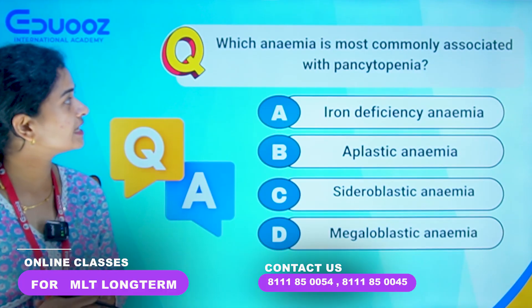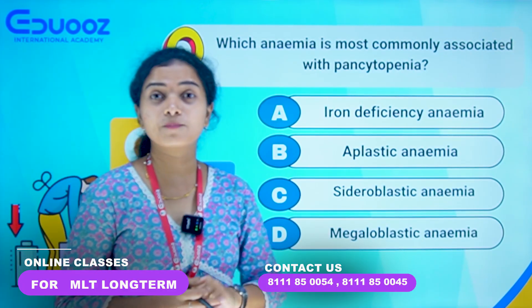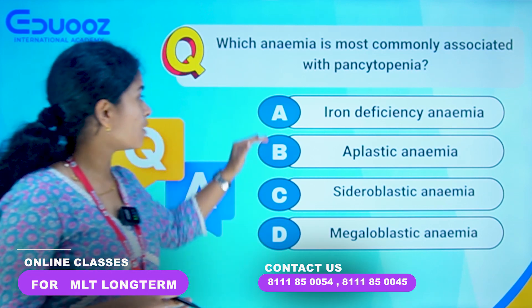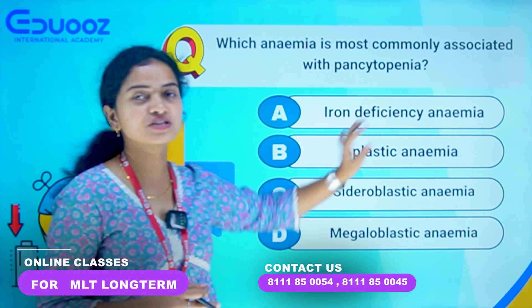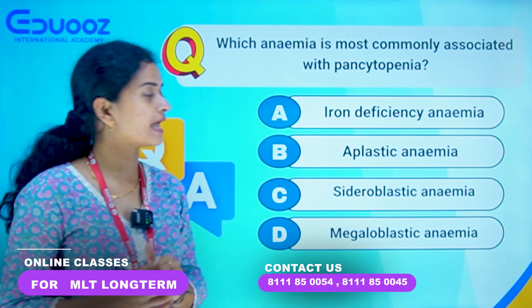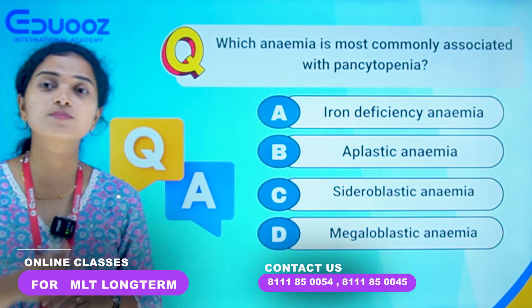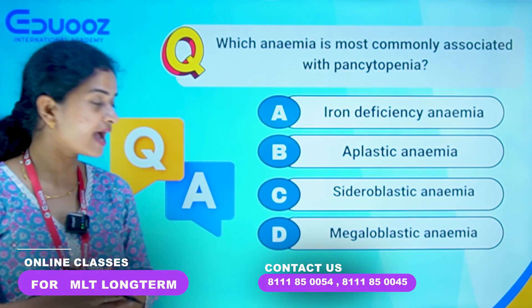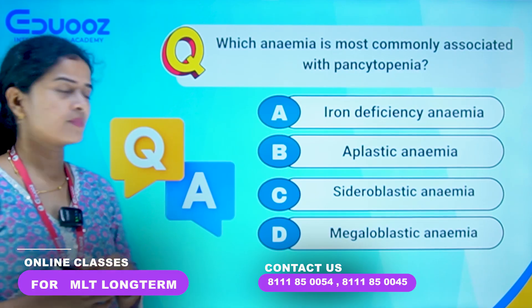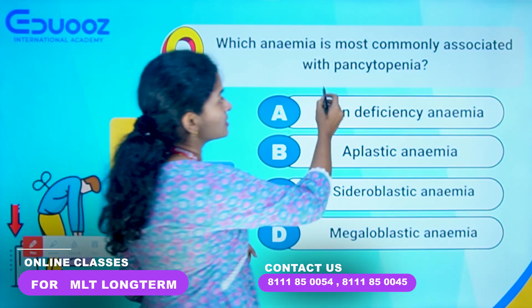First question: Which anemia is most commonly associated with pancytopenia? Options are A: Iron Deficiency Anemia, Option B: Aplastic Anemia, Option C: Sideroblastic Anemia, and Option D: Megaloblastic Anemia.